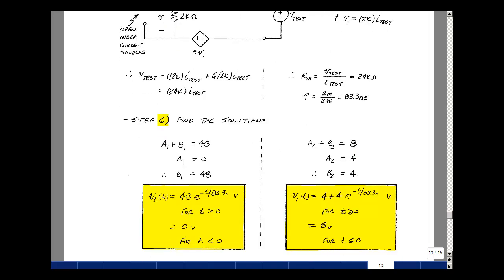And now I can complete my problem. So a1 plus b1 was 48, a1 was 0, so b1 is 48. So the voltage across the inductor is 48 times e to the minus t over tau, which is 83.3 nanoseconds. And that's true for t greater than 0. For t less than 0, we found that the voltage across the inductor was 0 as a short. So I have a discontinuity here at t equals 0. So I go from 0 to 48 volts, and then exponentially decay back to 0.